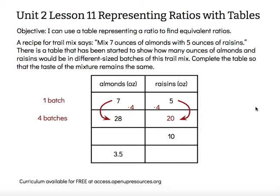The next row shows a 10 in the raisins column. I'm going to think back to that original one-batch recipe and wonder: how much bigger is this? That's 2 times bigger, so that means I made 2 batches of this trail mix, which means I would need twice as much almonds — so I would need 14 ounces of almonds.